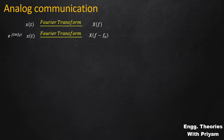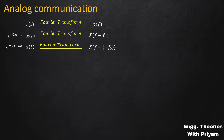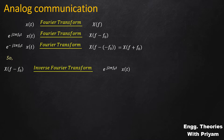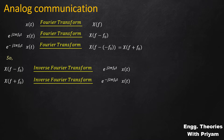Similarly, if we multiply the signal x(t) by e^(-j2πF0t), then in the frequency domain the Fourier transform of x(t), which was capital X(F), will be shifted by minus F0. So the Fourier transform of e^(-j2πF0t)·x(t) will become capital X(F + F0). Therefore, capital X(F - F0) has the inverse Fourier transform of e^(j2πF0t)·x(t), and capital X(F + F0) has the inverse Fourier transform of e^(-j2πF0t)·x(t).